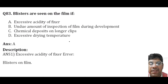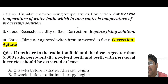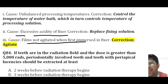Blisters on film can be caused by excess acidity of the fixer, films not being agitated when immersed in the fixer, or due to an unbalanced processing temperature.